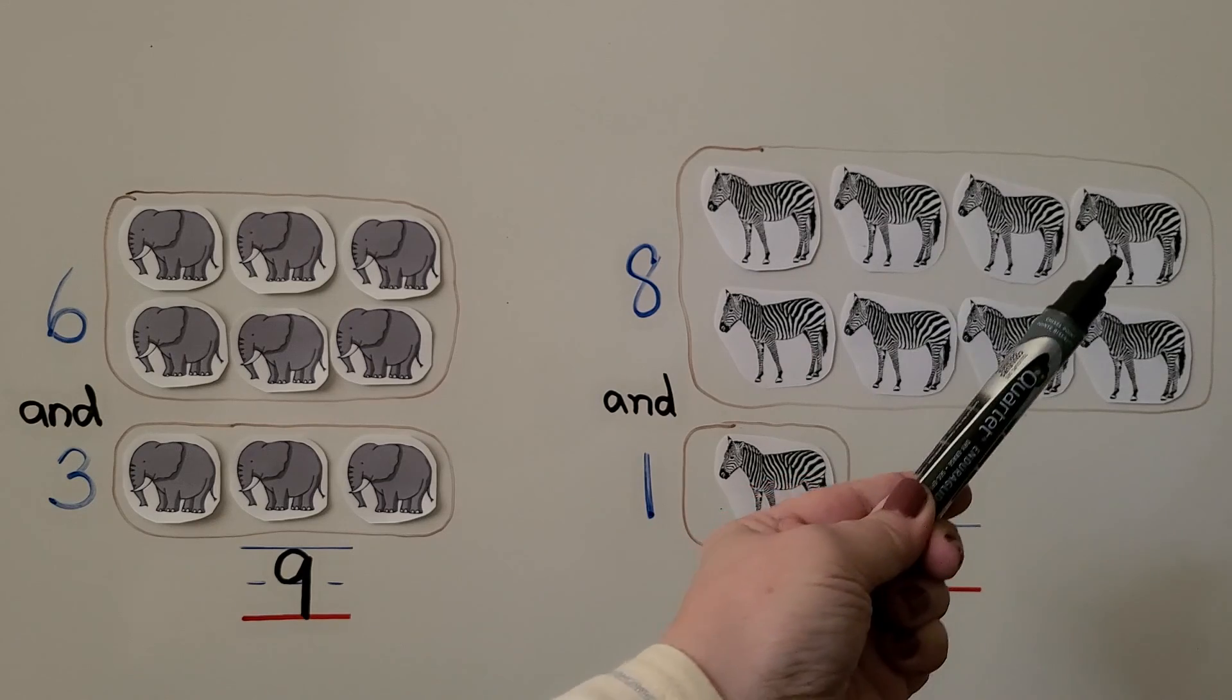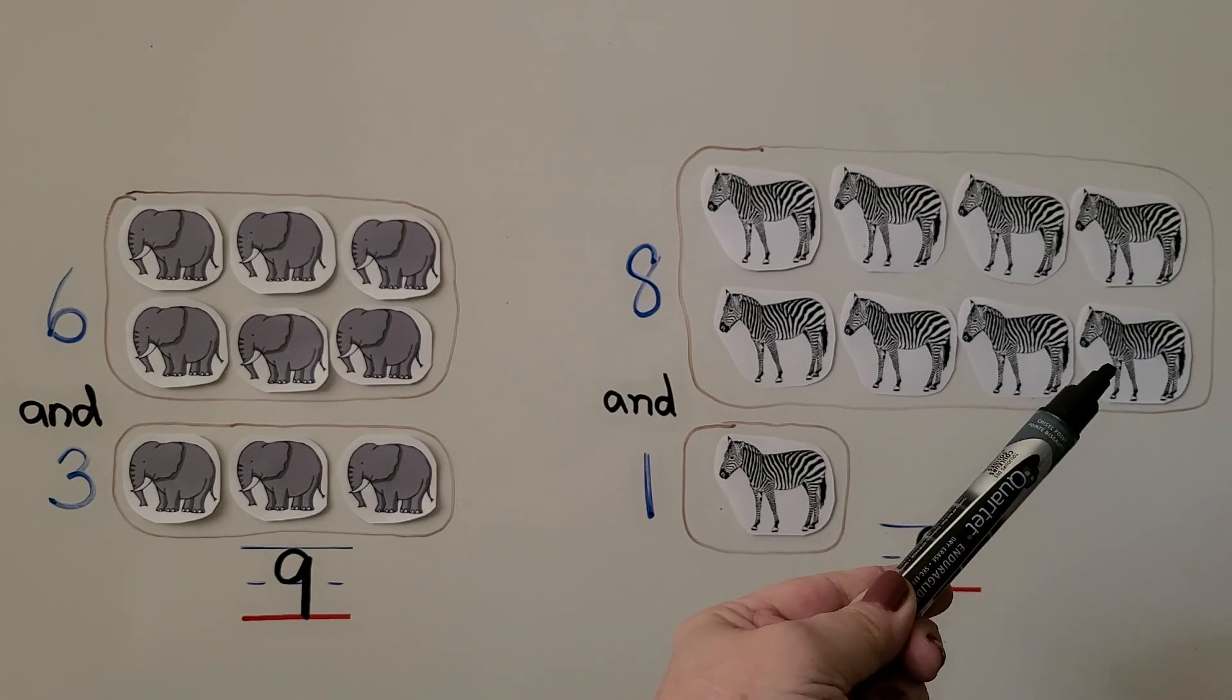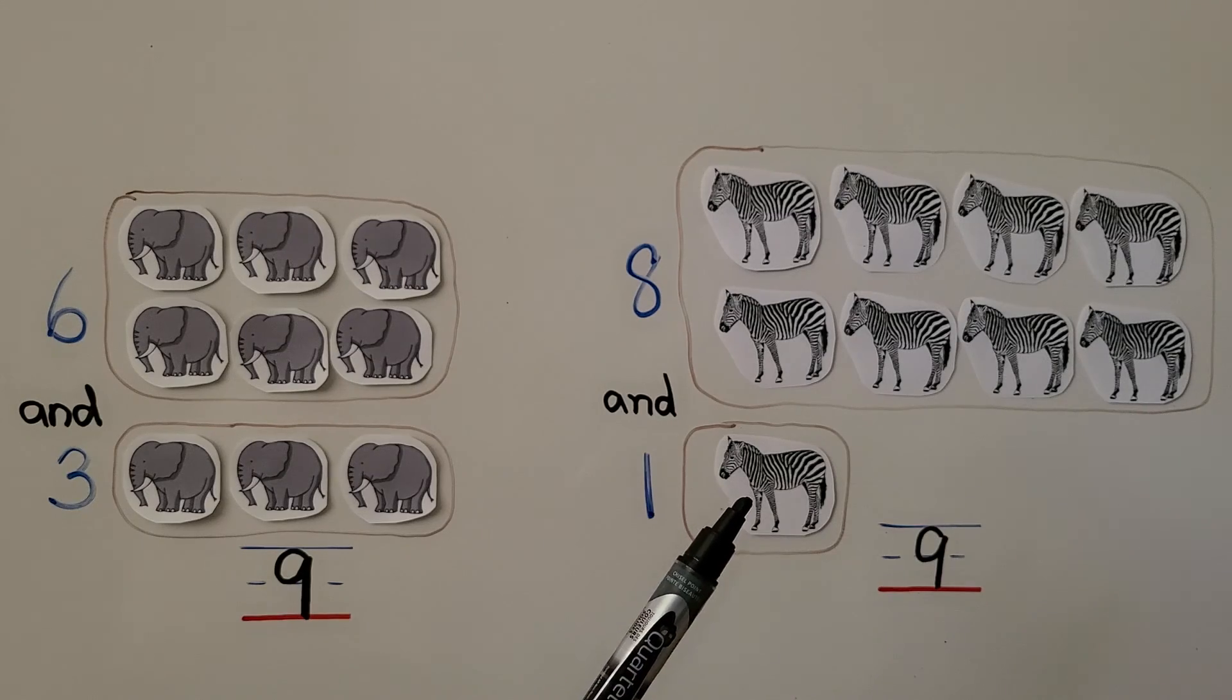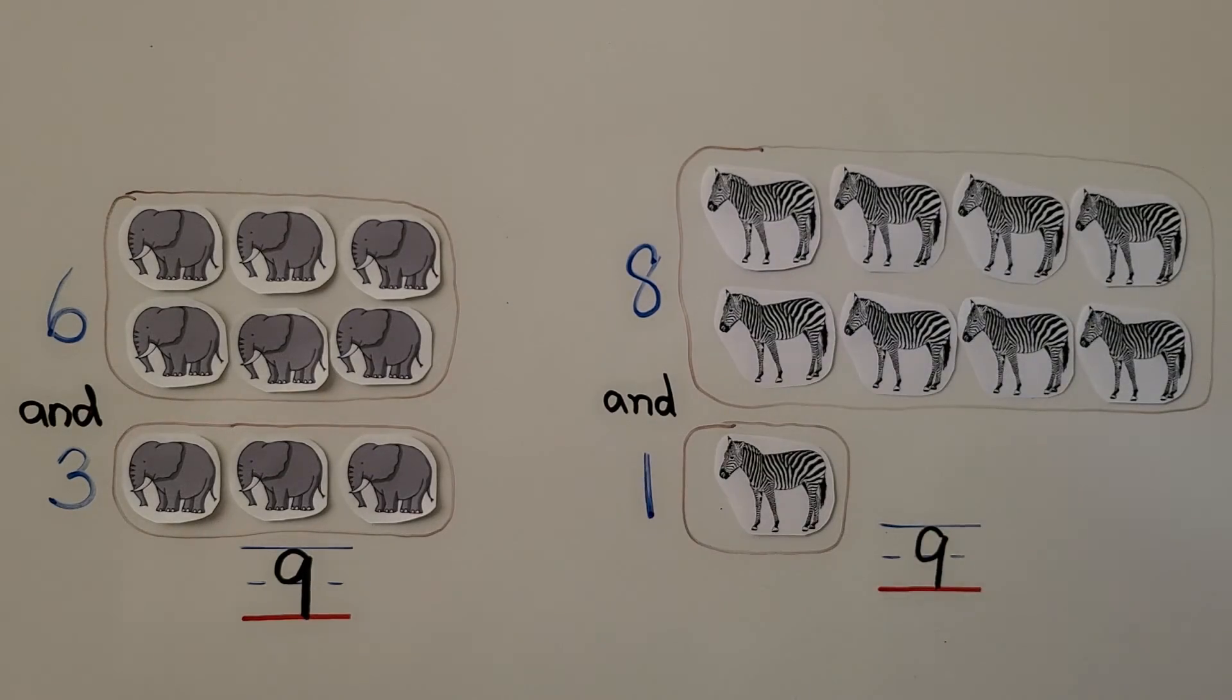We have 5, 6, 7, 8 zebras, and 1 more. We have 8, 9. There's 9 zebras. We can show 9 as 8 and 1 more.